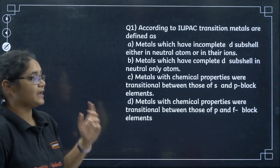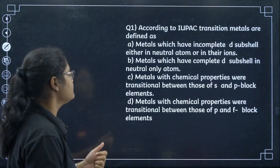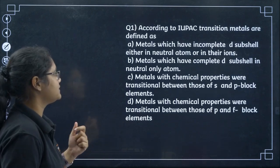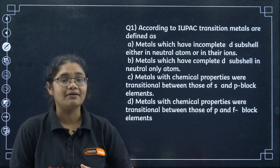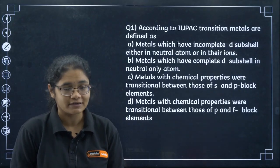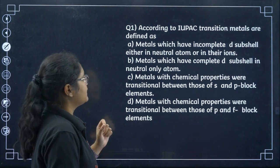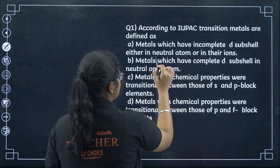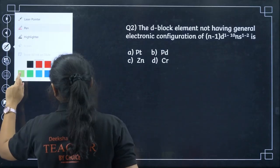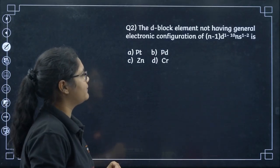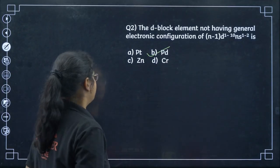Moving to questions from the question bank released by PU in 2025. According to IUPAC, transition metals are defined as metals which have incompletely filled d orbitals either in their ground state or in their common oxidation state — option number A. Next, the d-block element not having the general electronic configuration is palladium — option number B.